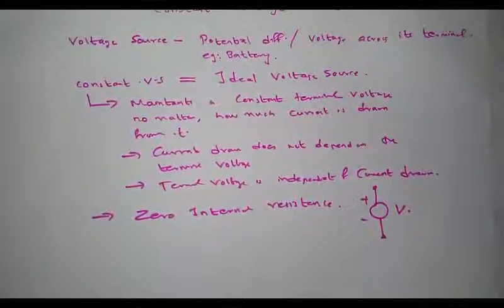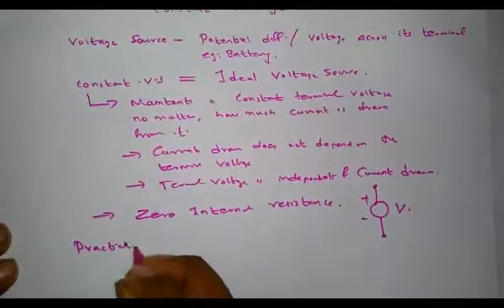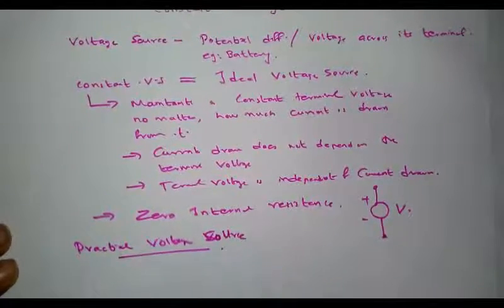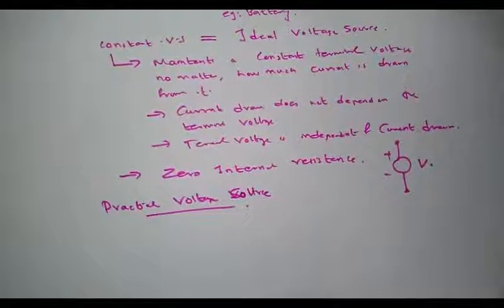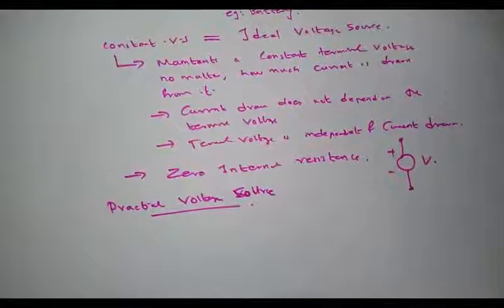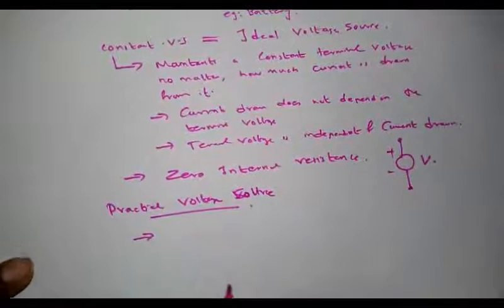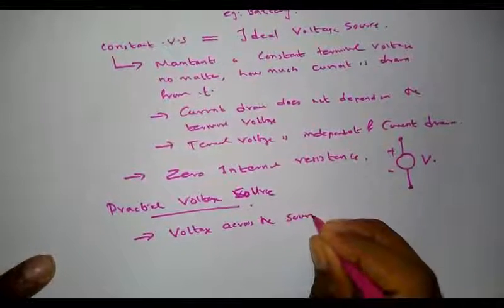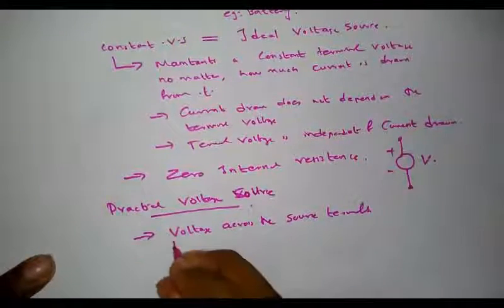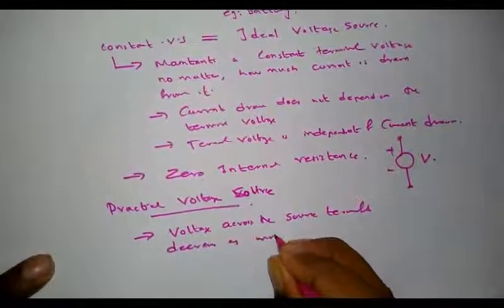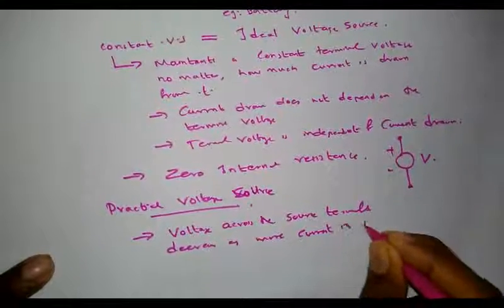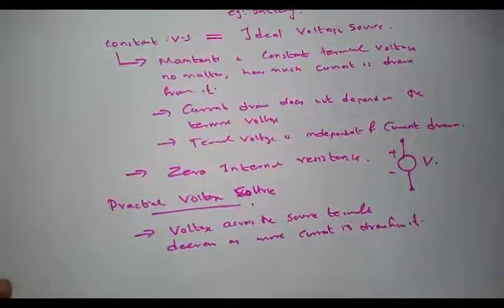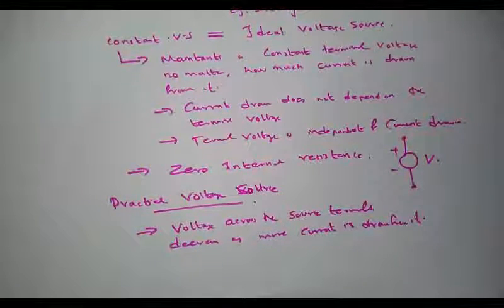Next we have the practical concept, that is a practical voltage source. A practical voltage source is completely different from a constant voltage source. In a practical voltage source, the voltage across the source terminals decreases as more current is drawn from it. That is a key difference between the constant voltage source and the practical voltage source.